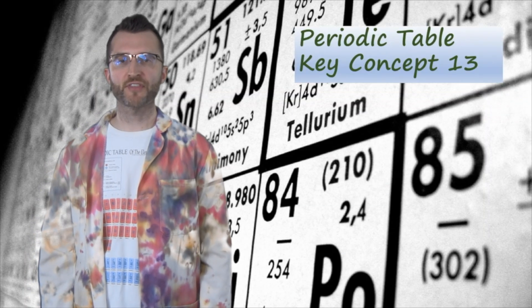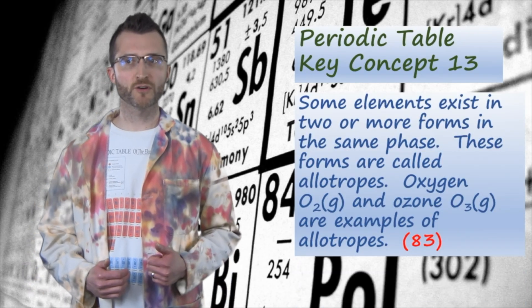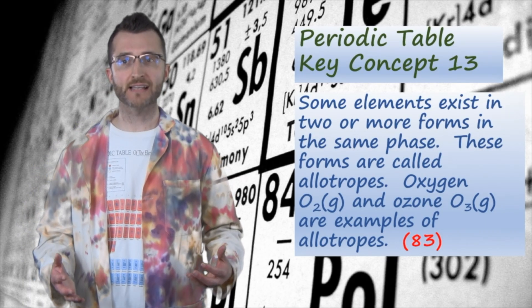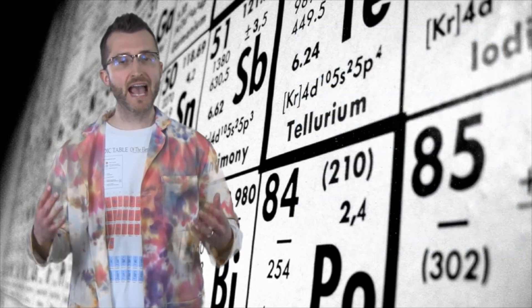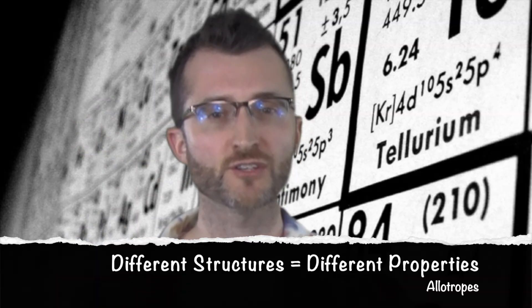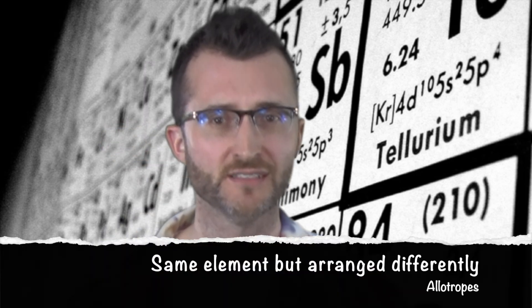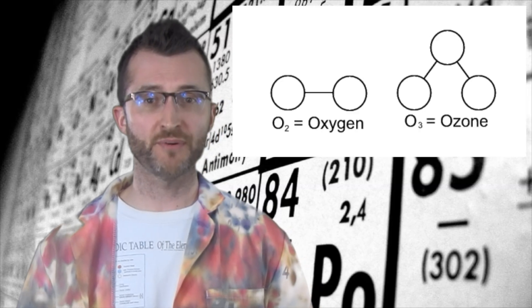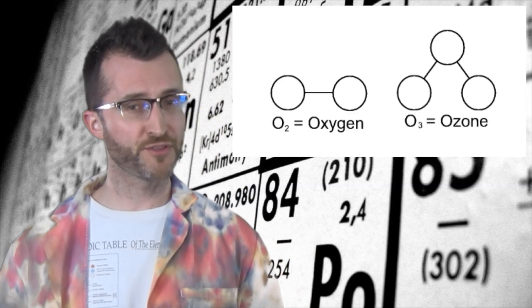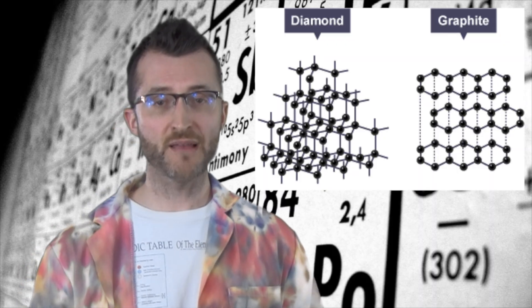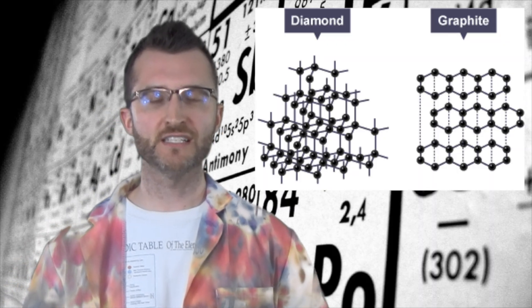Periodic Table Key Concept 13. Some elements exist in two or more forms in the same phase. These forms are called allotropes. Oxygen, O2 gas, and ozone, O3 gas, are examples of allotropes. Allotropes have different structures, which leads to different properties. So even though they're made up of the same atom, so they're the same element really, they're going to have very different physical and chemical properties. Diatomic oxygen, O2 for example, is what we breathe. Ozone though, O3, would be poisonous to us. Other common allotropes include graphite and diamond, which are both made up of carbon, but again they have very different properties.